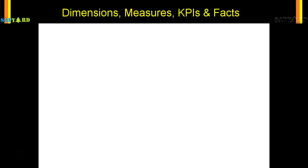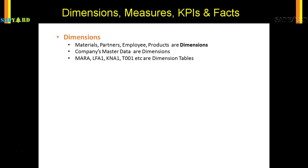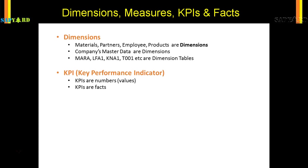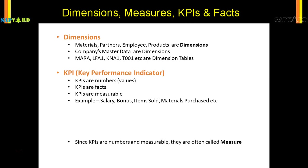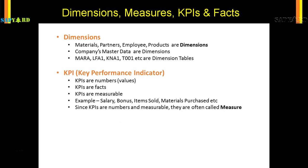Let us now look into some of the jargons or terminologies used in SAP HANA. When you work with models, you would often hear the word 'dimension'. Dimension is nothing but a fancy term for your master data. The company's assets like materials, business partners, employees, and products — all those are master data and they are known as dimensions. The master data tables are actually your dimension tables.